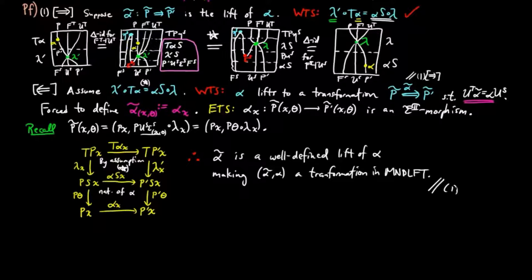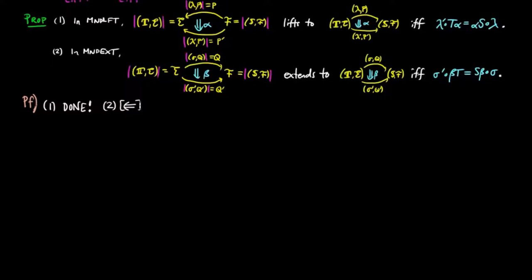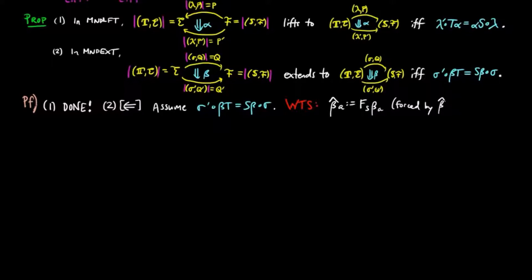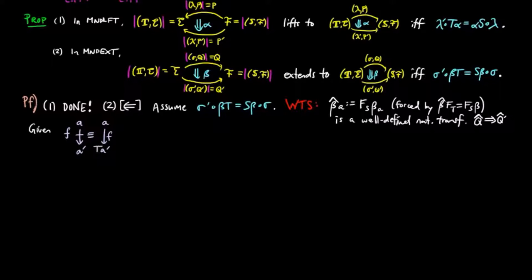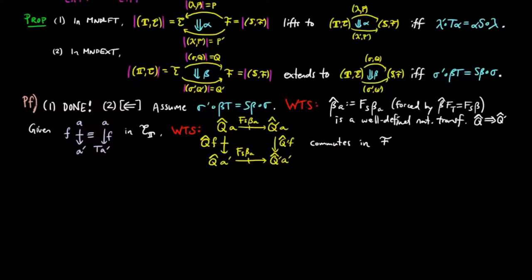And this completes the proof for one. For two, in the reverse direction, assume σ'βT equals Sβσ. We want to show that the morphism β̂ on component A, defined by FS·βA — which is forced on us by the requirement that β̂·FT equals FS·β — is a well-defined natural transformation from Q̂ to Q̂'. This means that given a morphism F in the Kleisli category for the monad T, we want to show that the following square commutes in the Kleisli category for the monad S.